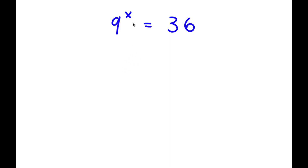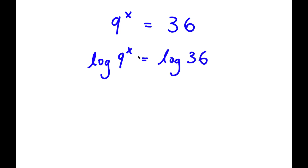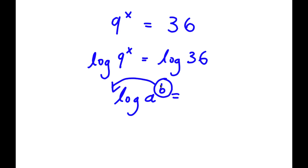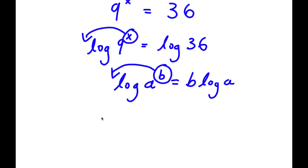In this problem, I have 9 to the power of x is equal to 36. To solve this, I'm going to take the log on both sides. So now I have log 9 to the power of x is equal to log 36. If I have something in the form log a to the power of b, I can move b to the front, so this equals b times log a. So I can move x to the front: x times log 9 is equal to log 36.